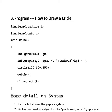Hash include graphics.h, hash include conio.h, void main. int gd is equal to detect, gm — gd is driver and gm is mode. initgraph takes the address of the driver, address of the mode, and the path of our BGI file. My path is c:\tc\bgi.